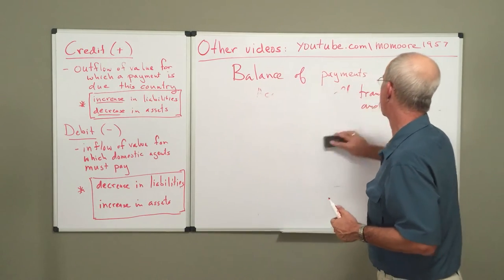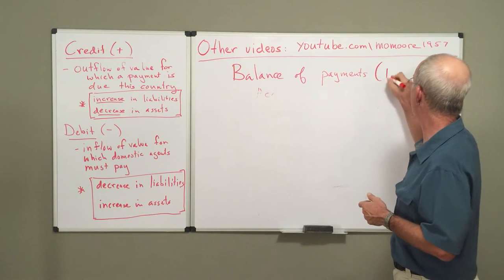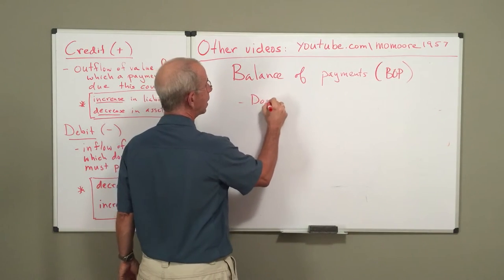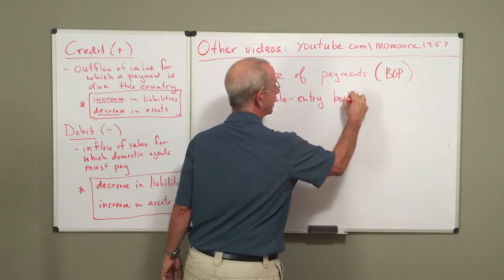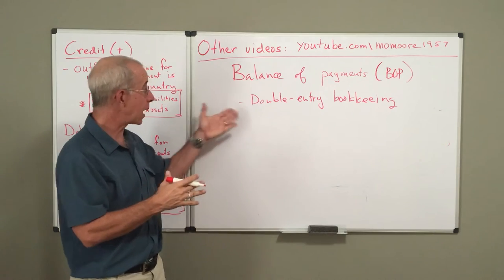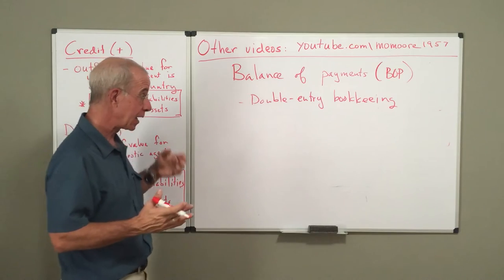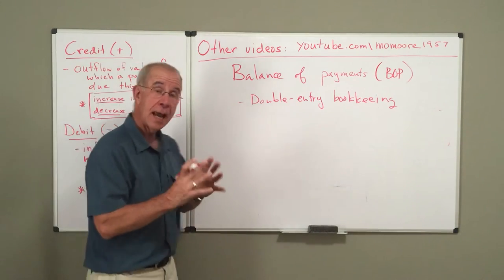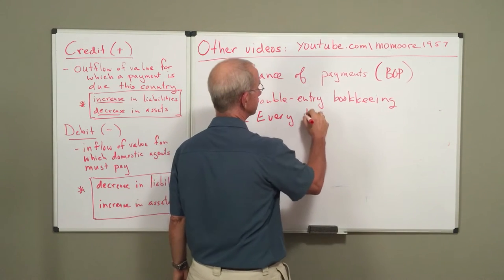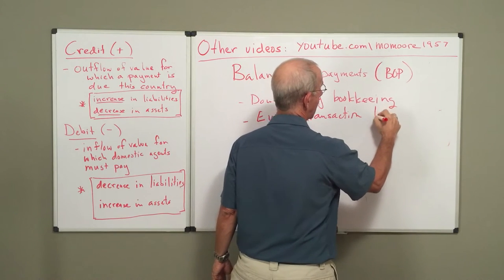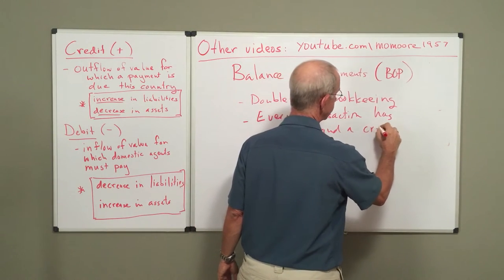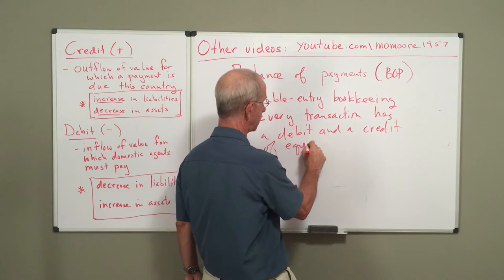A couple of things to note about the balance of payments, or as I will often designate it, BOP: it reflects double-entry bookkeeping. This is a very important concept in accounting. The bottom line with double-entry bookkeeping is that every transaction has a debit and a credit of equal value.